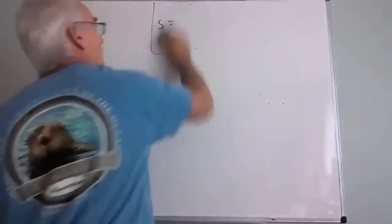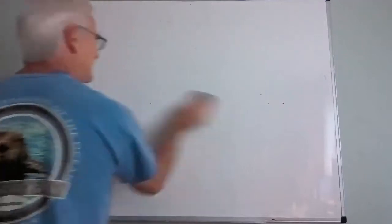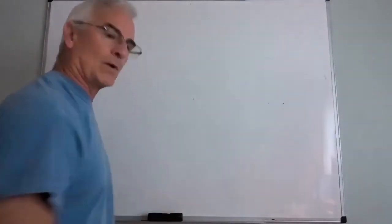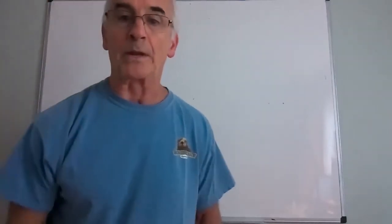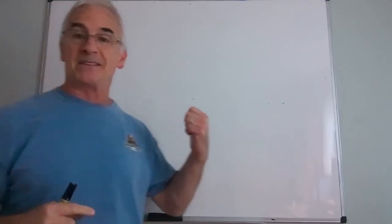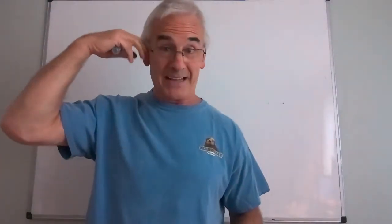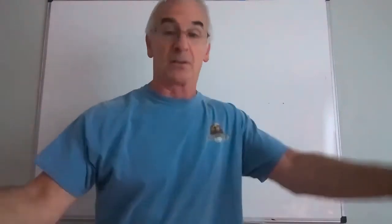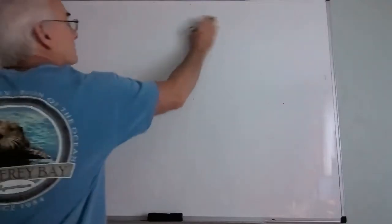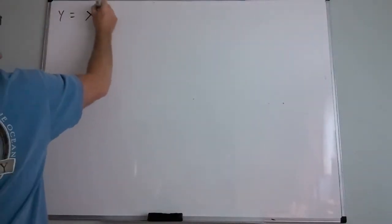It may seem odd to set up a problem you can't finish, but in Calc 2 we learn techniques for estimation — I could give you as many decimal places as you need accurately, even without knowing the closed form. Now let's consider y = x^(2/3) from (1, 1) to (8, 4).